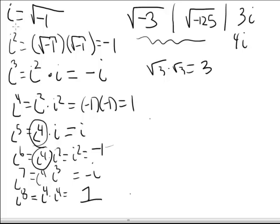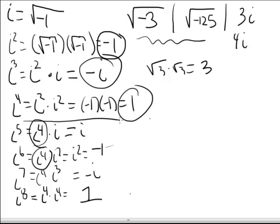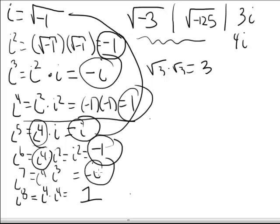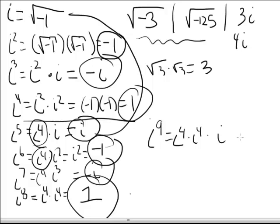Here's the pattern: i, negative one, negative i, one — and the pattern repeats. i to the ninth, rewritten as i to the fourth times i to the fourth times i, is one times one times i, which is just i. The next one should be negative one. Let's walk through a few more and then go over the general formula. i to the tenth gives i squared, or negative one. i to the eleventh gives i cubed, or negative i. And i to the twelfth will also be one.